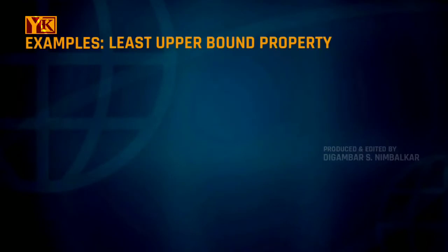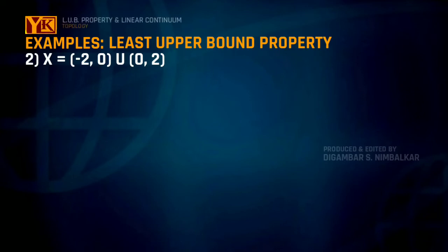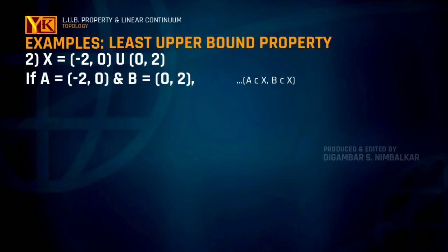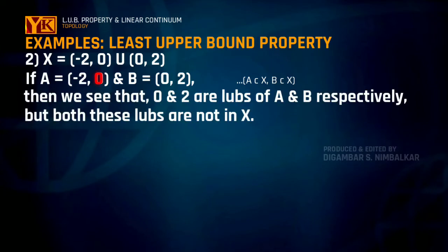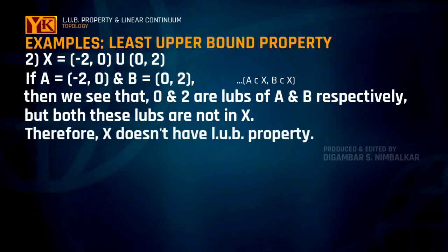If we consider the space x equal to the open interval (-2, 0) union with the open interval (0, 2), and let A equal the open interval (-2, 0) and B equal the open interval (0, 2): zero is the least upper bound for set A, but zero is not even an element of A and thus it is not in x. Similarly, for subset B, two is the least upper bound, but two neither lies in B nor in x. So the space x does not have the least upper bound property.